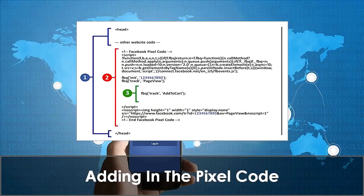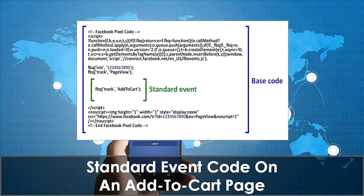Next, your Facebook pixel code will appear like the diagram above, except that your pixel ID will be different from the 10-digit code shown. Lastly, in your Facebook pixel code above the closing script tag, paste the standard event code that is relevant to your page — for example, an Add to Cart button. It's necessary to go through this process for every page.